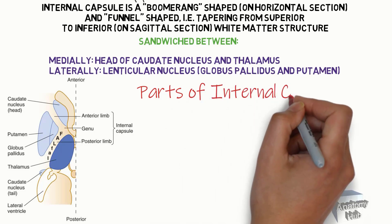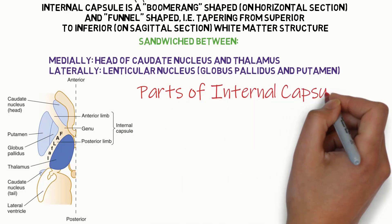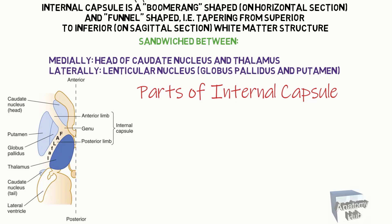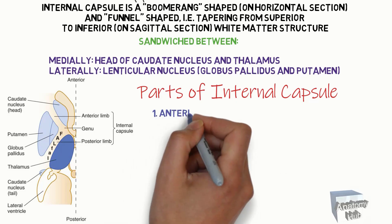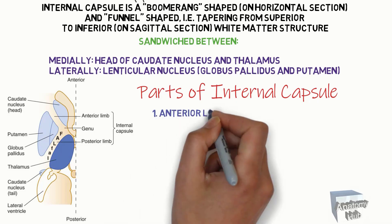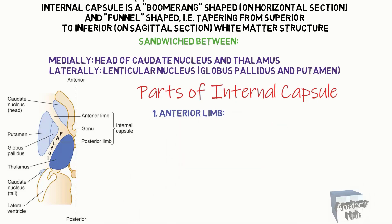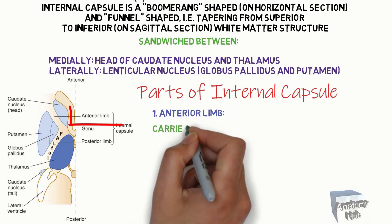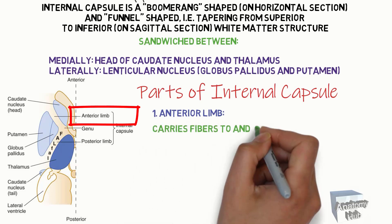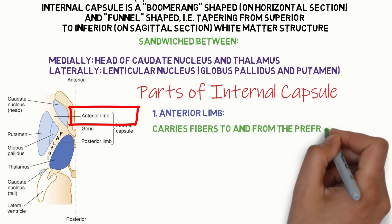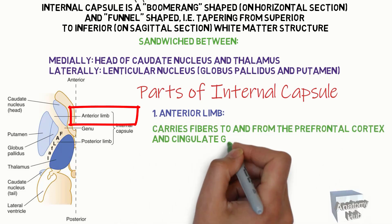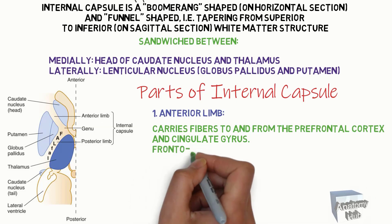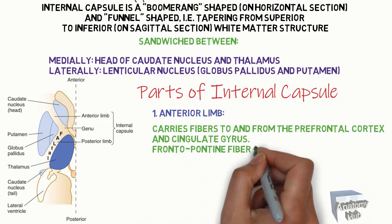Parts of the internal capsule. Part 1: Anterior limb. It carries fibers to and from the prefrontal cortex and cingulate gyrus. Frontopontine fibers descend through it.